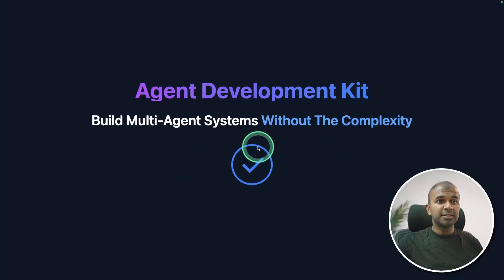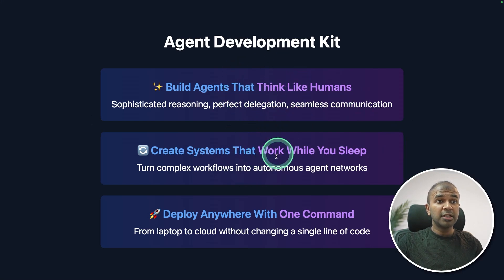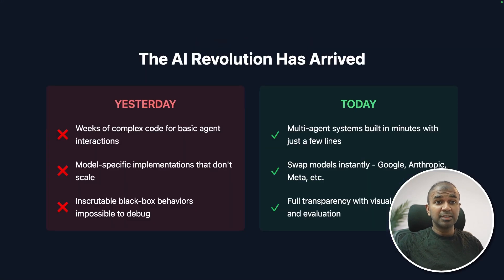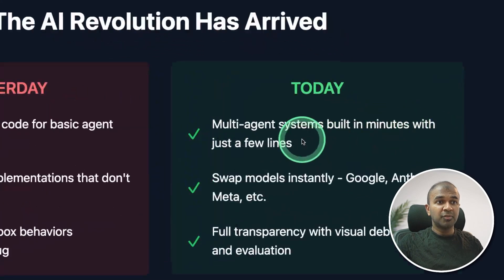It's a multi-agent system without the complexity — build AI agents that think like humans, create systems that work while you sleep, and deploy anywhere with just one command. This is even simpler than other frameworks such as Autogen, LangGraph, and CrewAI. You are able to build in minutes with just a few lines of code.